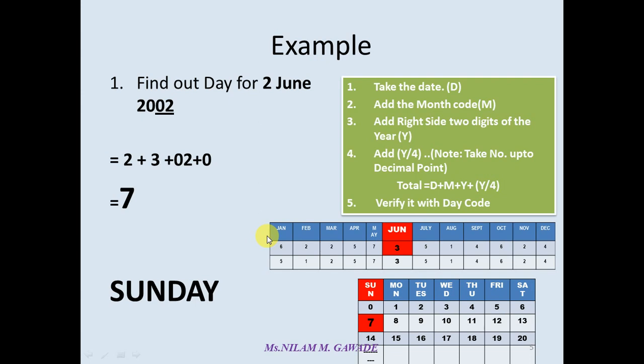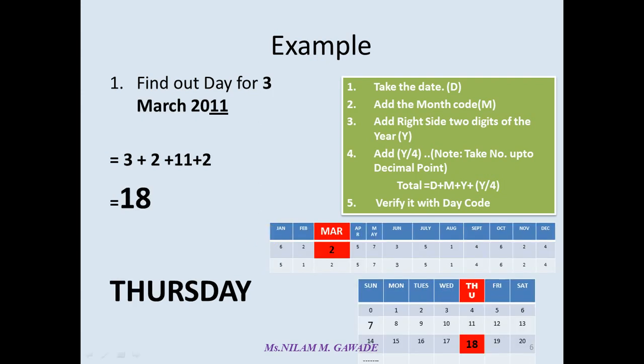Let us see one more example quickly. Third March 2011. Date is 3, take 3. Add month code, month code for March is 2, add 2 here. Third step is add right two side digits, here it is 11. Then fourth step is Y by four, so 11 by four, we will get answer 2 up to the decimal point. Total is 18. And see the month code chart, you will get 18 here, Thursday. So Thursday is our day. In case of we have seen both the examples which are non-leap year. If the year is leap year, then instead of using above row, just use below row. That is only the difference.